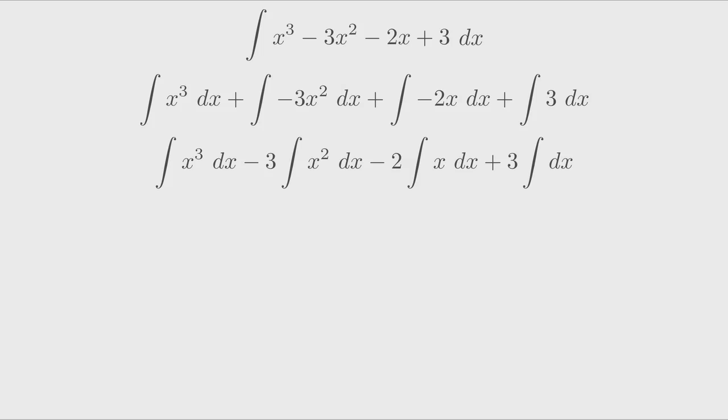Now all we need to do is the opposite of what we've done in the past with derivatives. Let's focus in on x³ for a second. To take the derivative of x³, we'd bring the 3 down in front and then subtract 1 from the exponent to get a result of 3x².